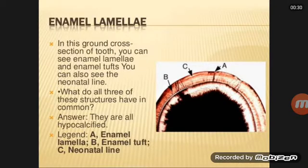The hypocalcified areas of enamel are: enamel lamella, enamel tufts, and enamel spindle. The surface structures include perikymata, rod ends, and cracks.